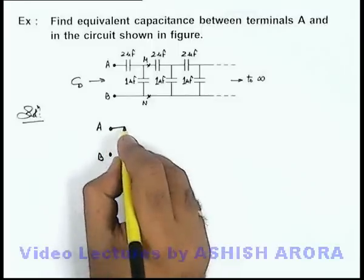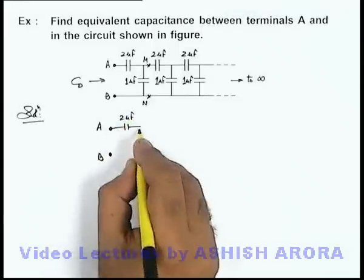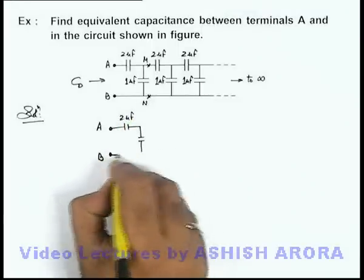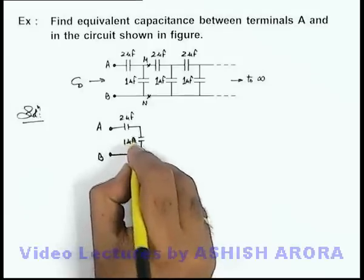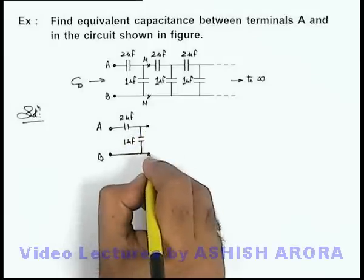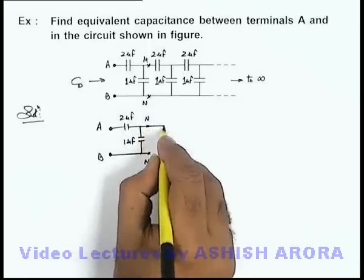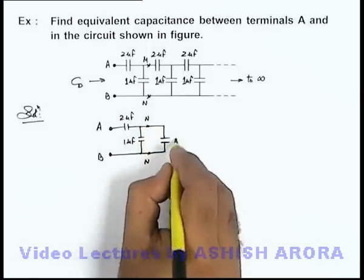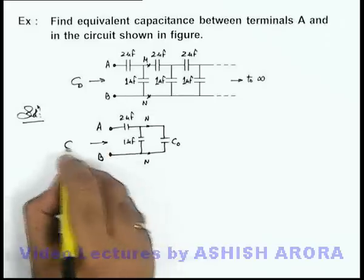So here we redraw the circuit with this 2 micro farad capacitor and this 1 micro farad capacitor, and across these points M and N we can connect the equivalent capacitance C₀, which is the capacitance of this combination.